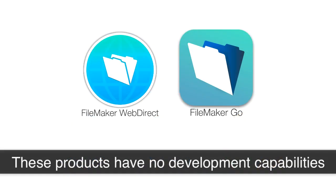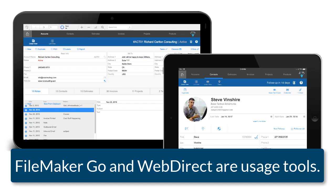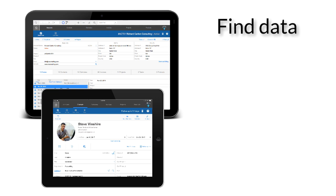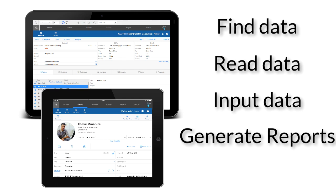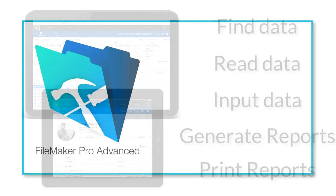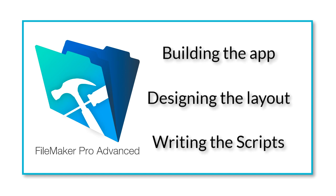As a reminder, there's no development or building of an application when using FileMaker Go or FileMaker WebDirect. Go and WebDirect are specifically usage tools — they're the tools your staff will use to find data, read data, input new data, generate reports, and even print out reports. Actually building the custom application, designing the layouts, and writing the scripts that perform specific tasks — that's all done in FileMaker Pro Advanced.